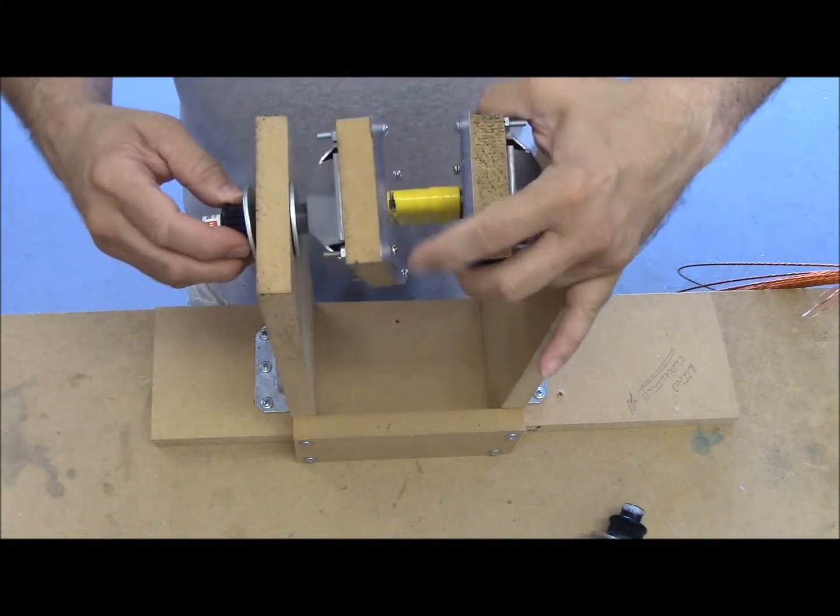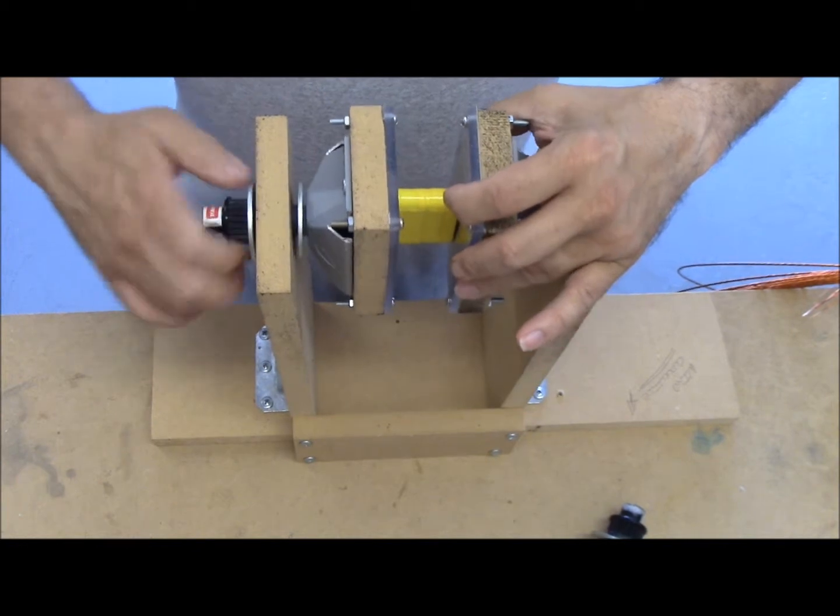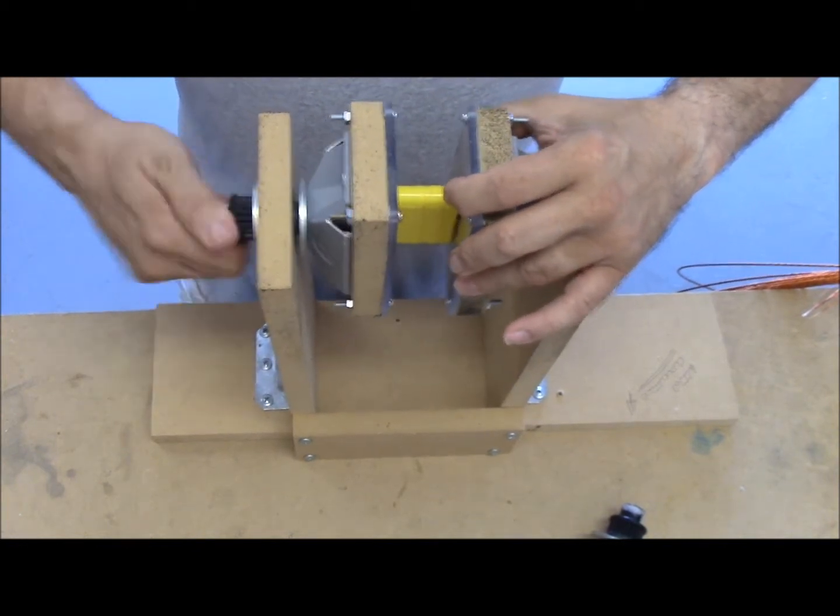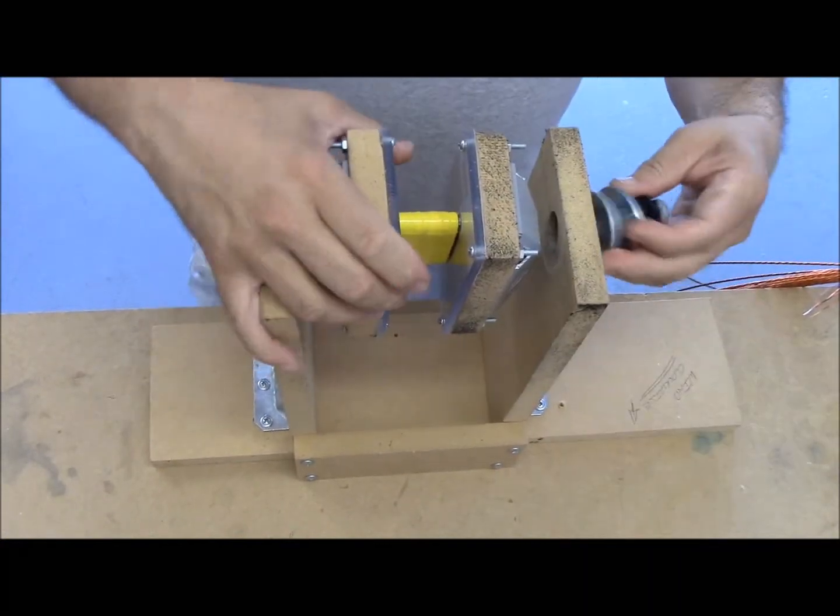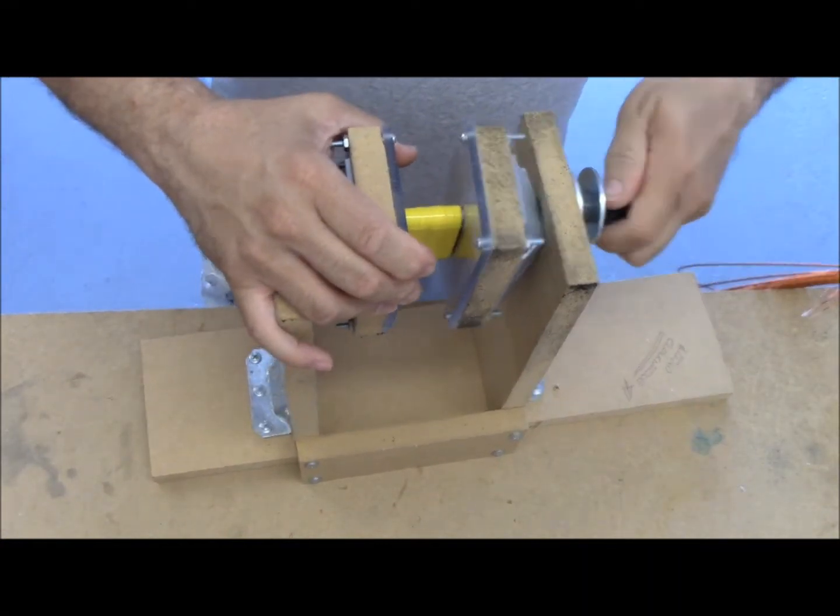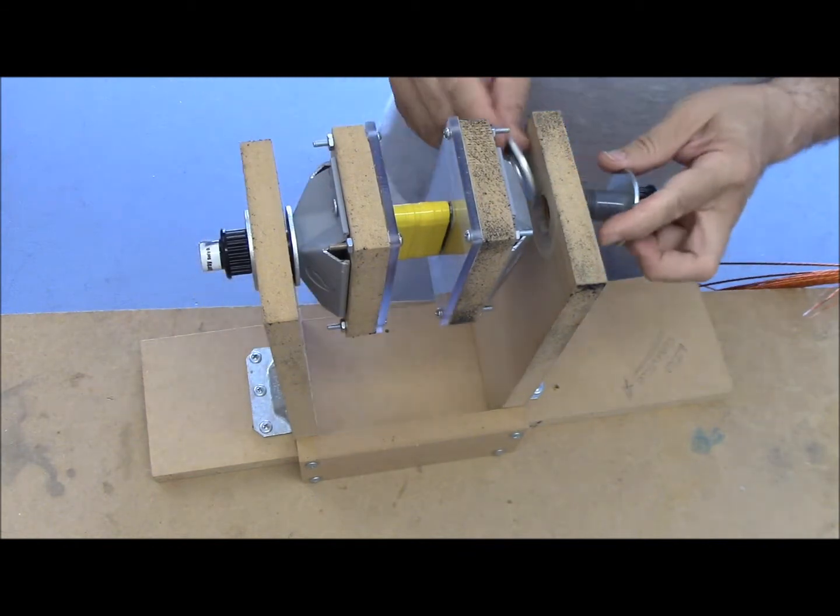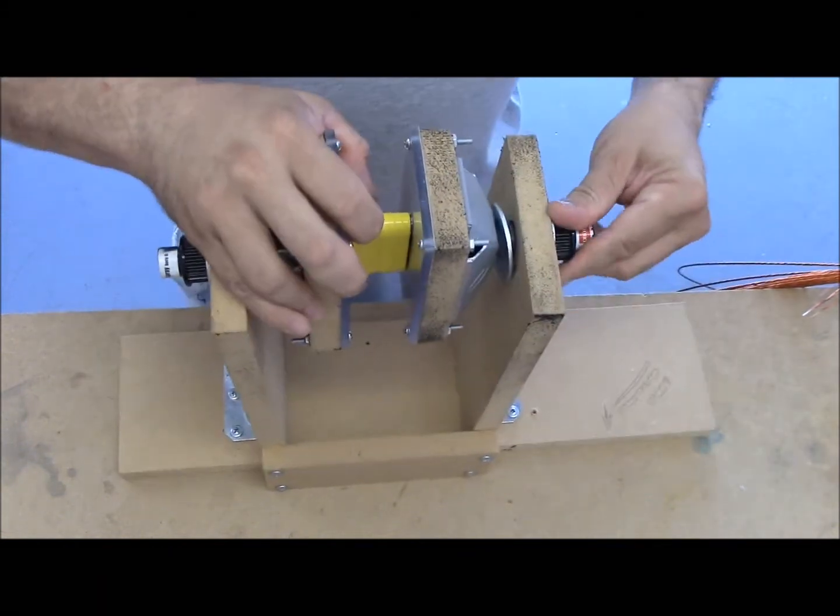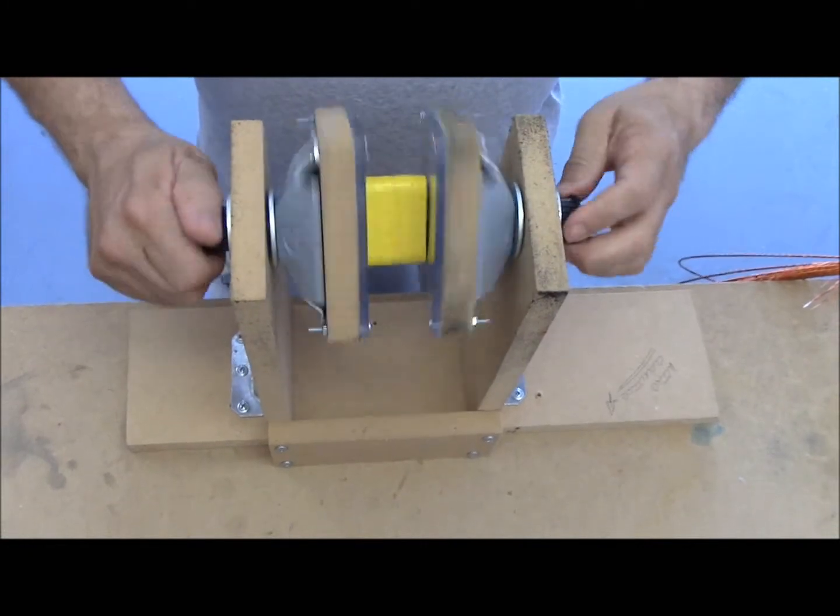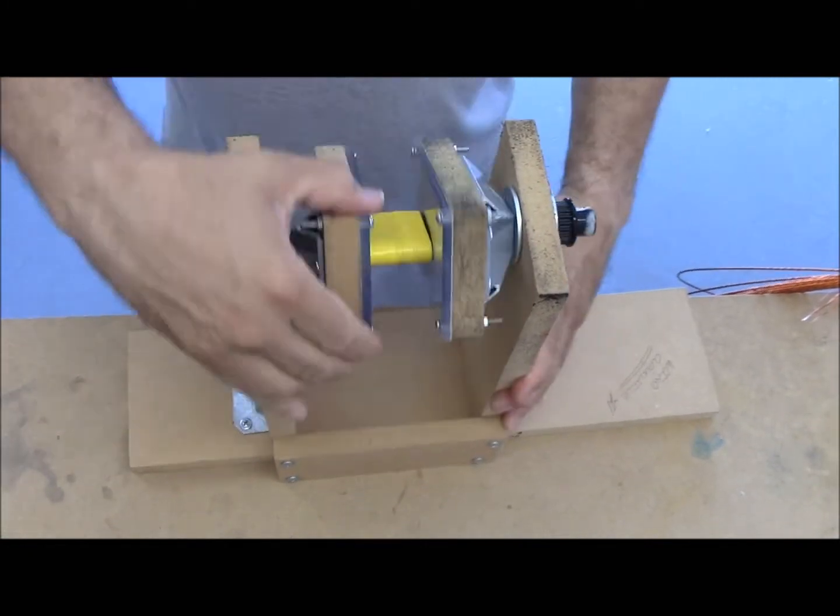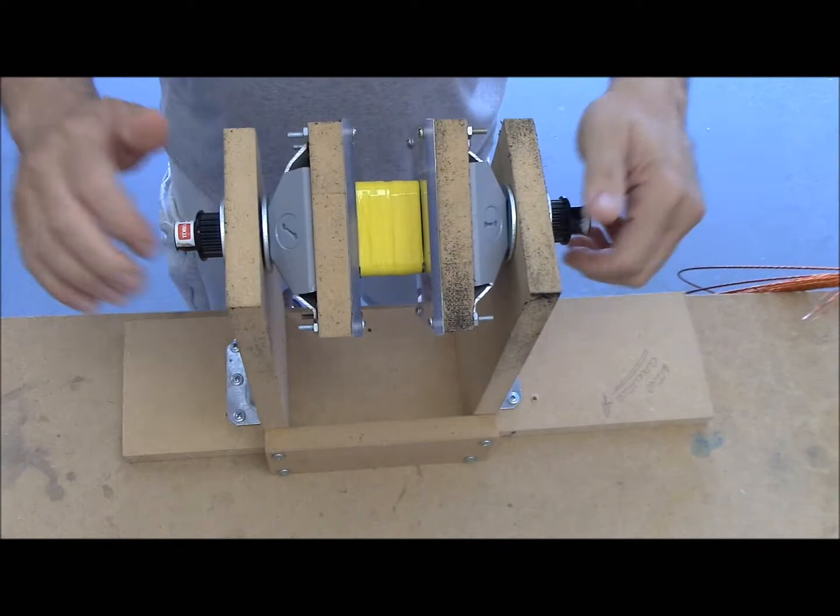Basically just screwed them down to these wooden blocks and we're going to mount this up. So the advantage of it being on this Toro sprinkler head riser or pipe is that you just screw it in like this. Come in on the other side. Wind this up like this on both sides and now we have a free flowing coil jig winder.